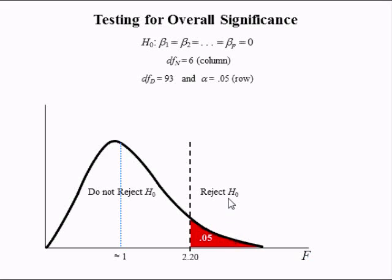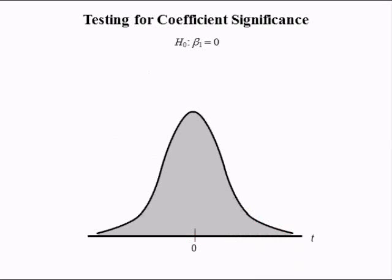The critical value defines the reject-the-null region and the do-not-reject-the-null region. Since the F-statistic is larger than the critical value, it is in the reject-the-null region, meaning there is at least one slope coefficient not equal to 0. In other words, the model appears to be significant. Next, we test each slope coefficient individually.